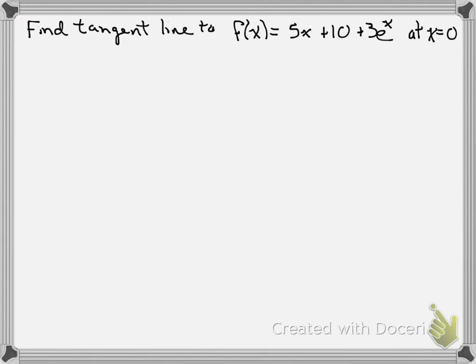We're going to find the tangent line to f(x) = 5x + 10 + 3e^x at x = 0. There's two things we need to find a linear function or a tangent line: we need the point that it goes through and the slope.